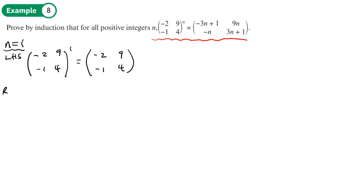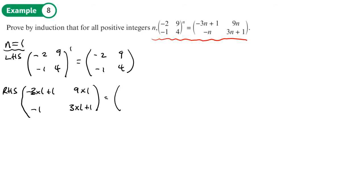On the right hand side with n equals 1, we get [-3 times 1 plus 1, 9 times 1; -1, 3 times 1 plus 1], giving [-2, 9; -1, 4]. So the statement is true for n equals 1.